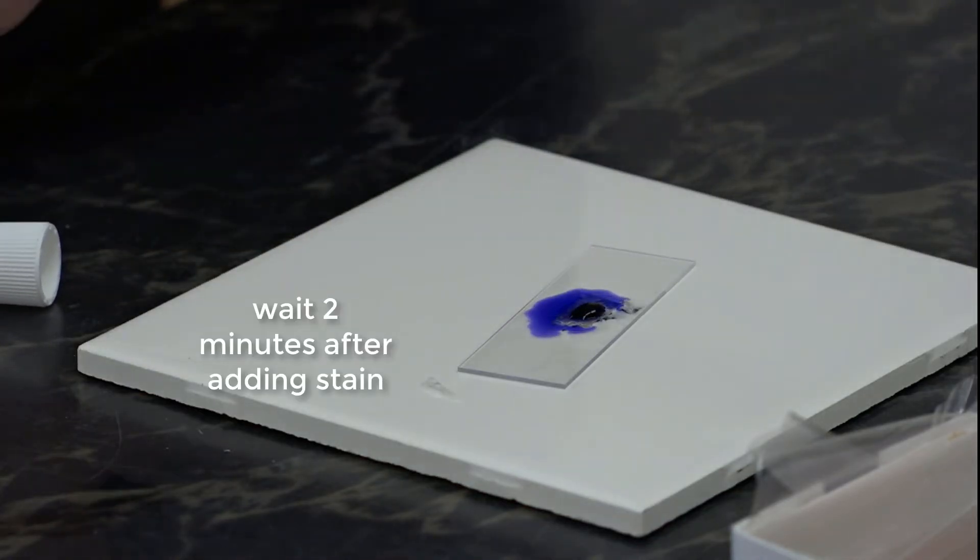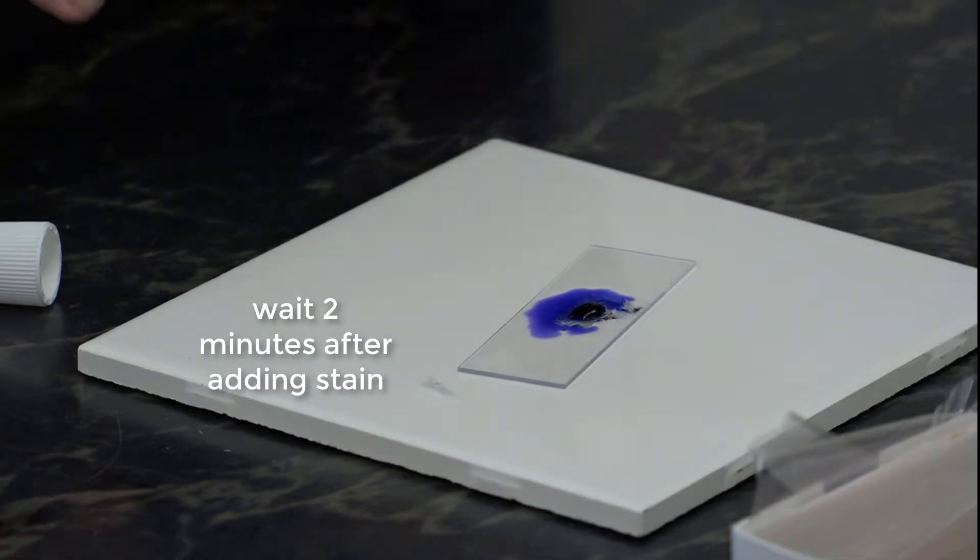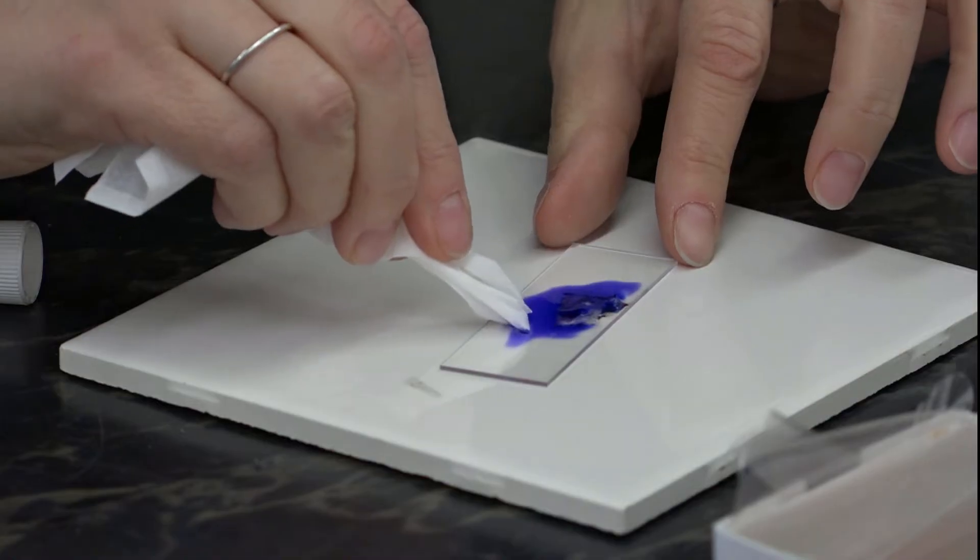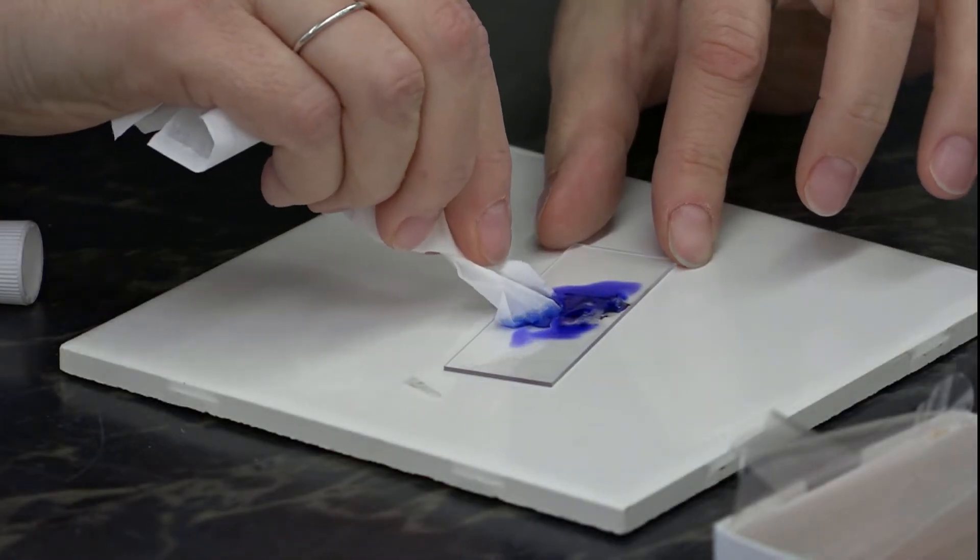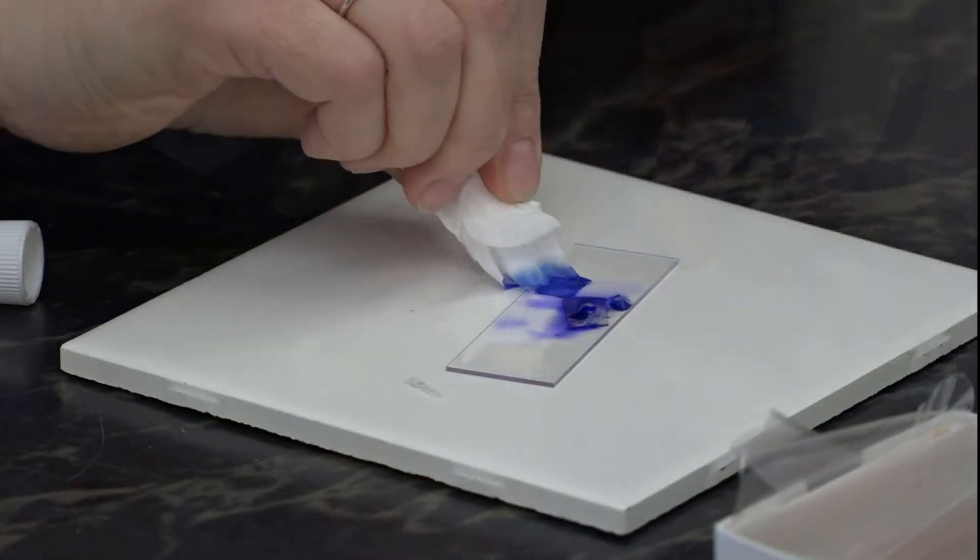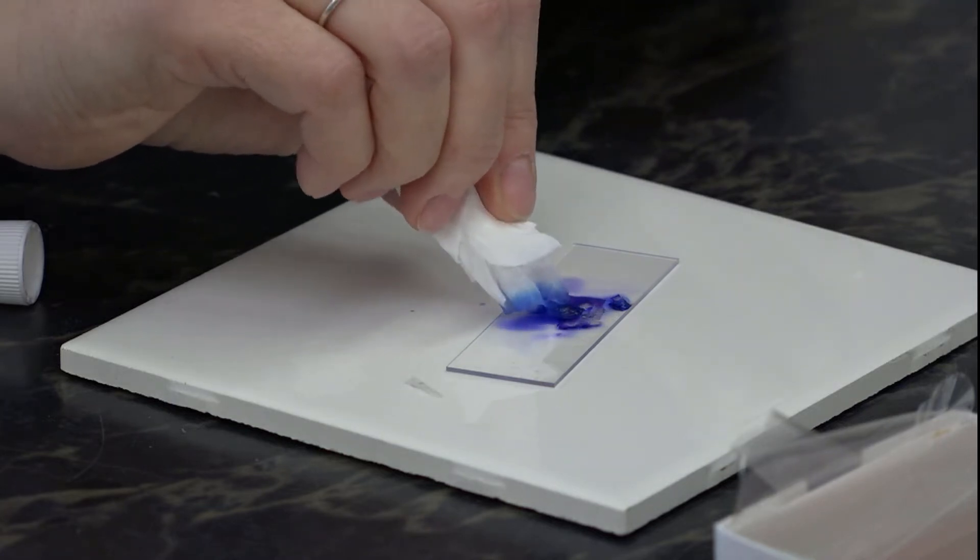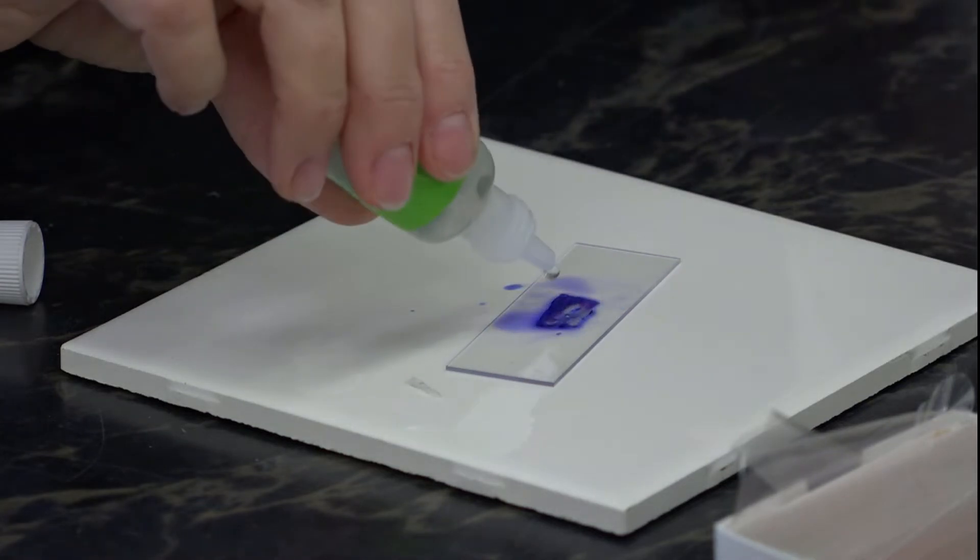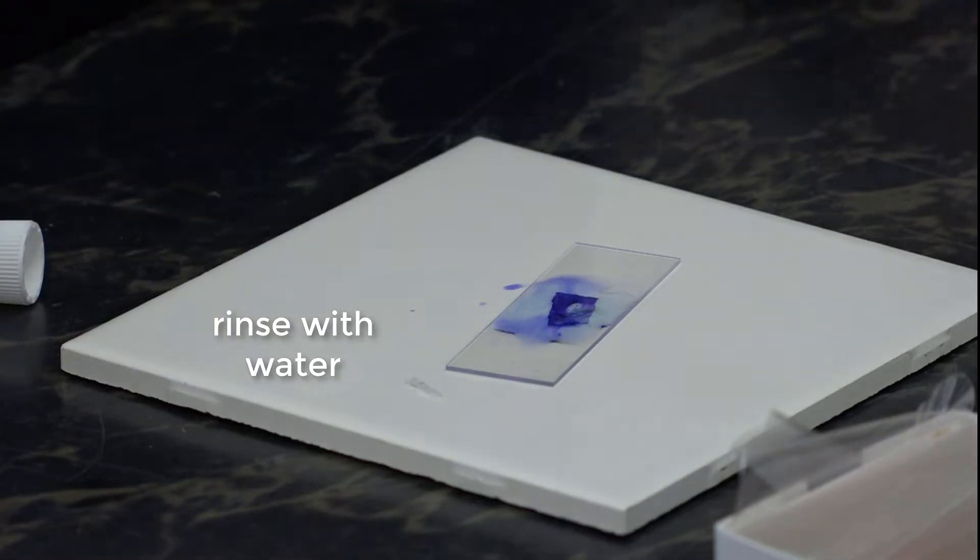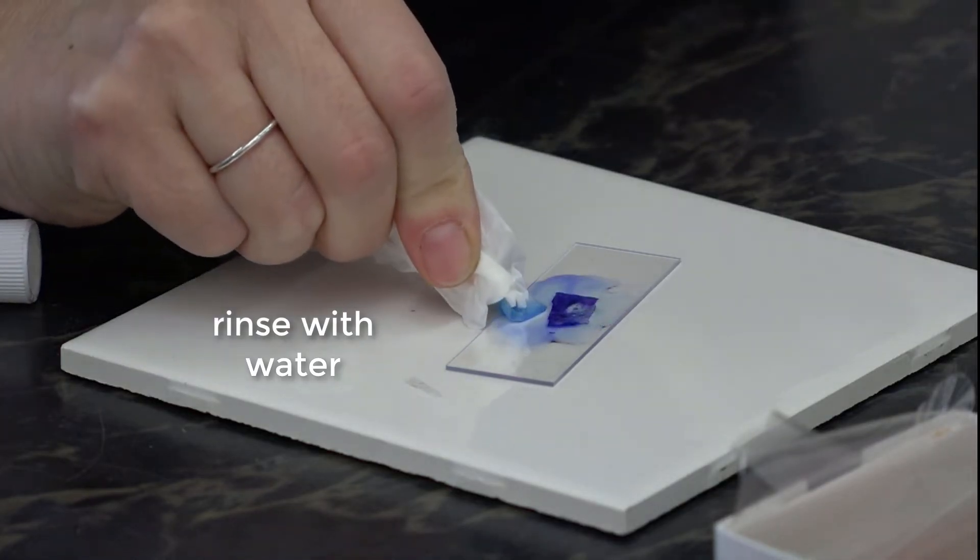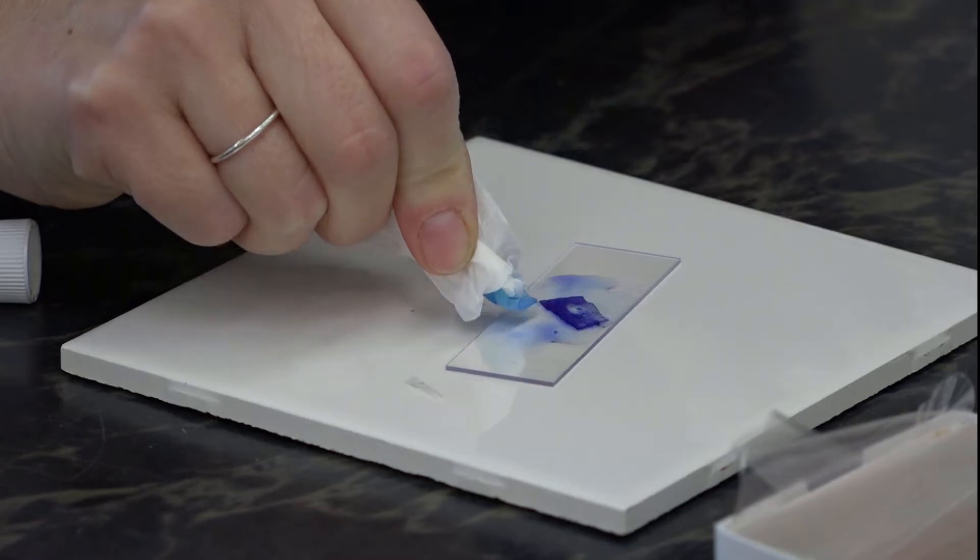We're going to leave that for a couple minutes to diffuse into the tissues. You'll want to draw off the excess stain. Add water. Remove that. You're removing the excess stain.